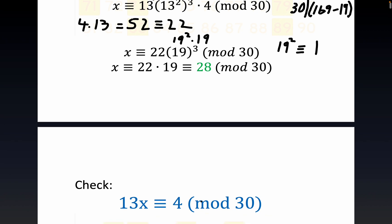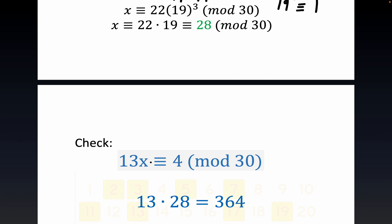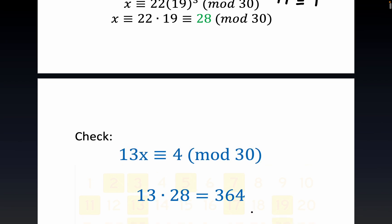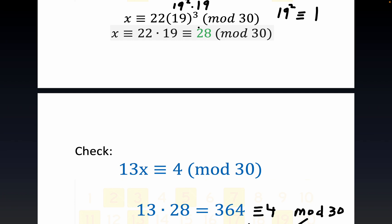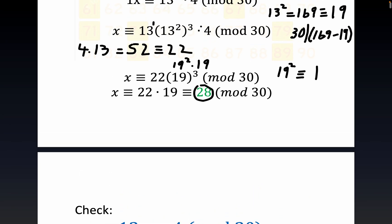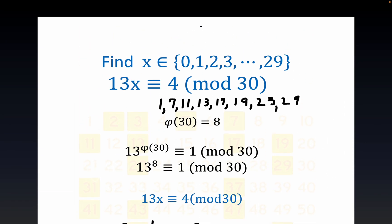Now let's check the answer. This is our original equation, 13 times 28, I put the 28 right here, is equal to 364, but notice that is congruent to 4 mod 30. So it does check. This is the very same thing it's saying is that 30 divides 364 minus 4, which is 360. 30 divides 360. So that's a check, everything checks out, and that means that 28 is our solution. If you come back up here, 28 is a member of this set, so x is equal to 28.